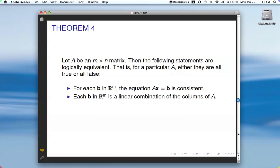Another way to say that is that each B in R M is a linear combination of the columns of A. Because we saw just earlier that A times X, when you multiply A times X, you're actually taking a linear combination of the columns of A. This also means that the columns of A span R M, because you can produce any vector in R M as a linear combination of the columns of A.